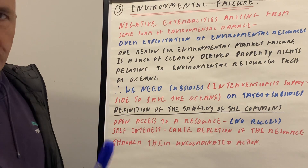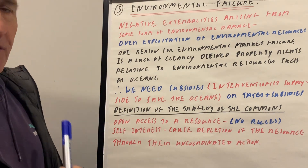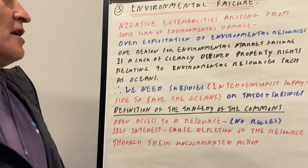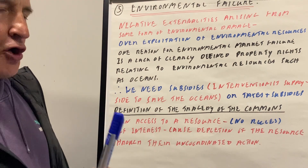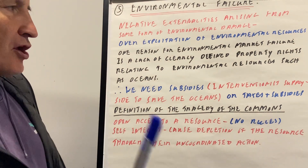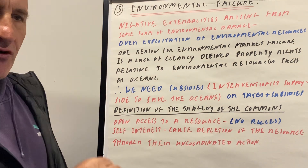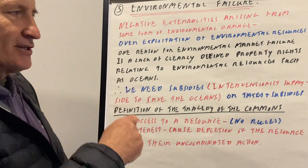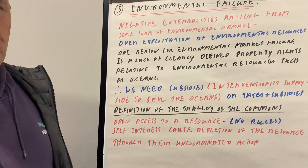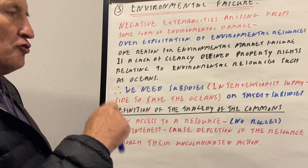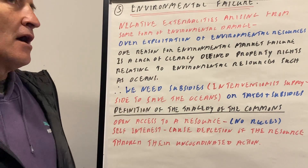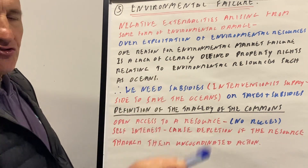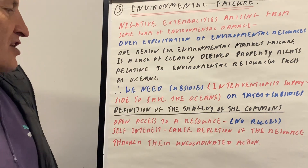One reason for environmental market failure is a lack of clearly defined property rights. Property rights don't really work in this area because who actually owns the air, and if someone does pollute the air, then how can someone like Bangladesh sue China, the UK, or America for the damage that's been done to those economies?